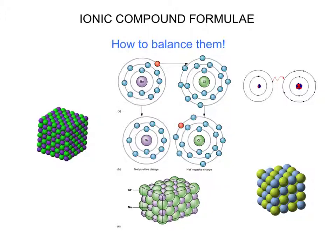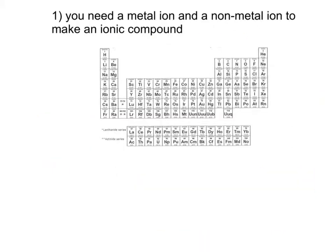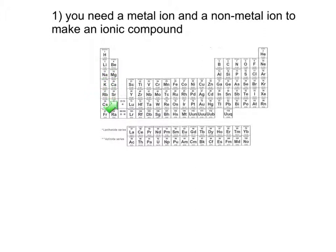Now we're going to go through how you actually look at these ionic compounds and balance them. To start, you need a metal ion and also a non-metal ion in order to make an ionic compound. The metal ions are found on the left side of the periodic table, and the ones we'll most commonly use are lithium, sodium, potassium, calcium, magnesium — those sorts of metal ions.